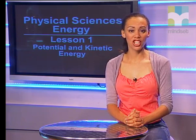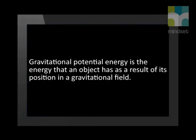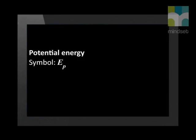So we see that atoms can have energy as the result of their position. Consider the heavy ball of a demolition machine. When the ball is held high up, it has energy due to its position above the ground. This is called gravitational potential energy — the energy that an object has as the result of its position in a gravitational field. The position is measured relative to a certain point of reference, usually the ground. The symbol we use to represent potential energy is a capital E with a subscript P, measured in joules (J).